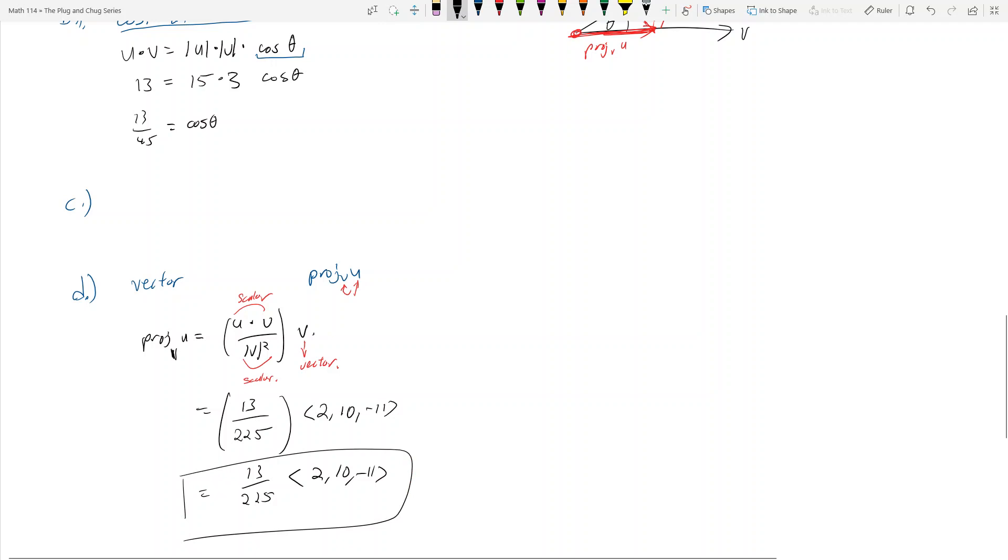So what did I do? So why did I skip part c? Well, if we go back to this row right here, where we have proj v u was equal to u dot v over v squared v, notice this is equivalent to saying u dot v over the magnitude of v, not v squared, just the magnitude of v, times v over the magnitude of v. So essentially I just split up this magnitude of v squared.